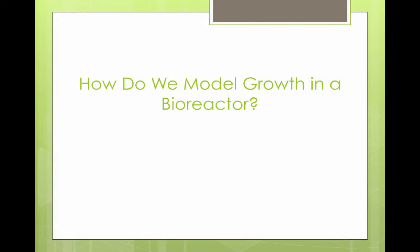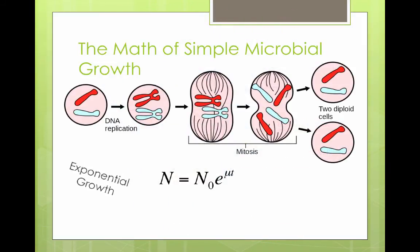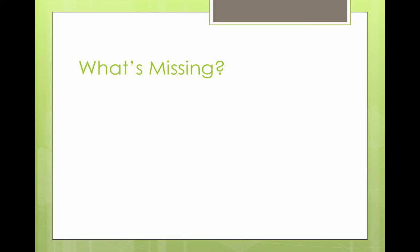How can we model the growth of bacteria in a bioreactor? It turns out bacteria follow the typical cell cycle of dividing from one cell into two, and the simple math of this cell growth is an exponential model. For every one cell, it divides into two, which divides into four, and so on — this is called exponential growth. But we don't have exponential growth going on forever in a bioreactor.